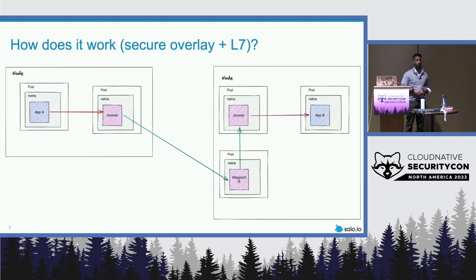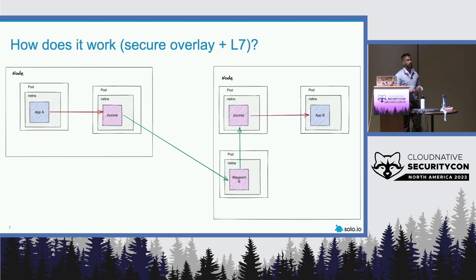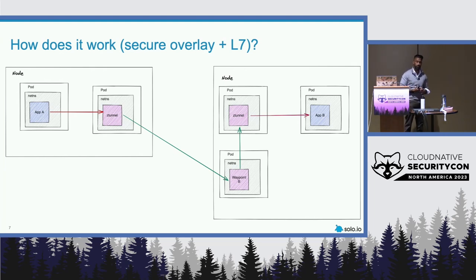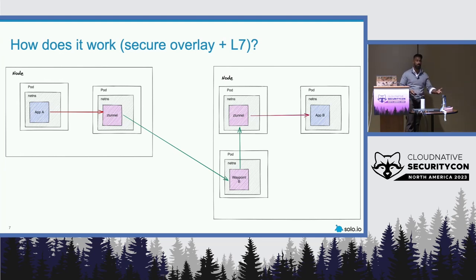The waypoint proxy makes use of the gateway API spec in Kubernetes. You specify a gateway class — which Jim will show in the demo — and that acts as our enforcement point for layer 7. The waypoint proxy still uses Envoy, because Envoy is the most performant layer 7 proxy we know of and have used alongside Istio for a very long time.